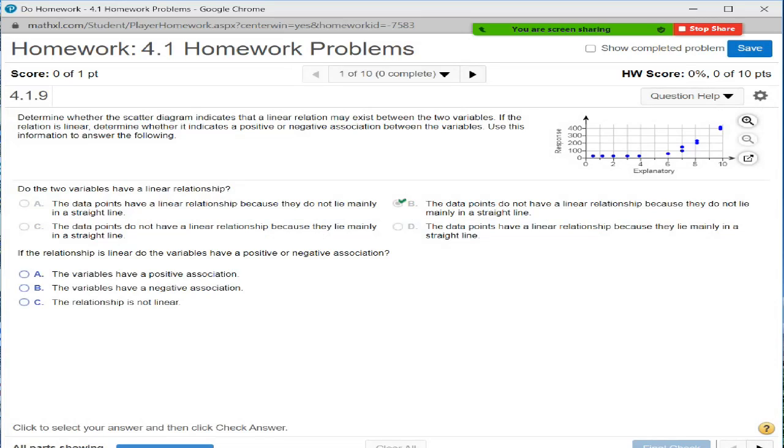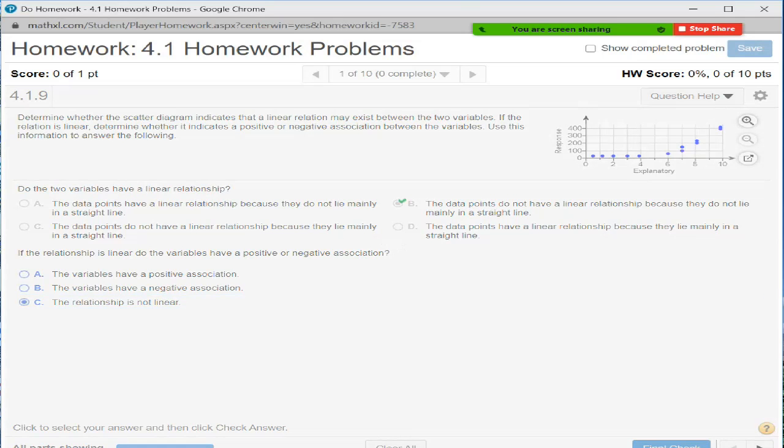If it's linear, do the variables have a positive or negative association? Well, we answered it's not linear in the first part, so I'm just going to answer the same thing. It's not linear in the second part.